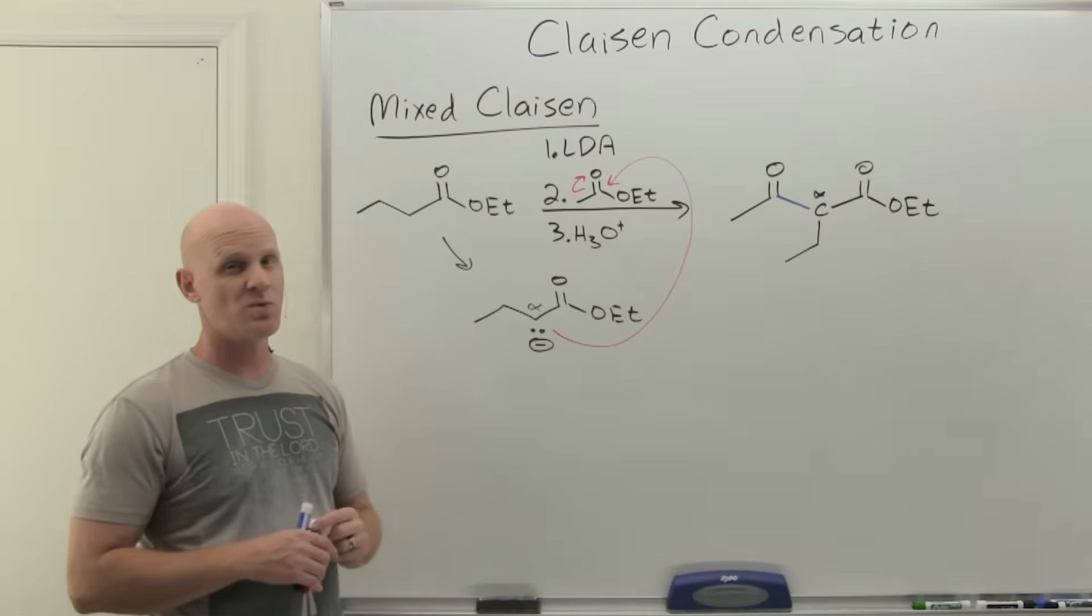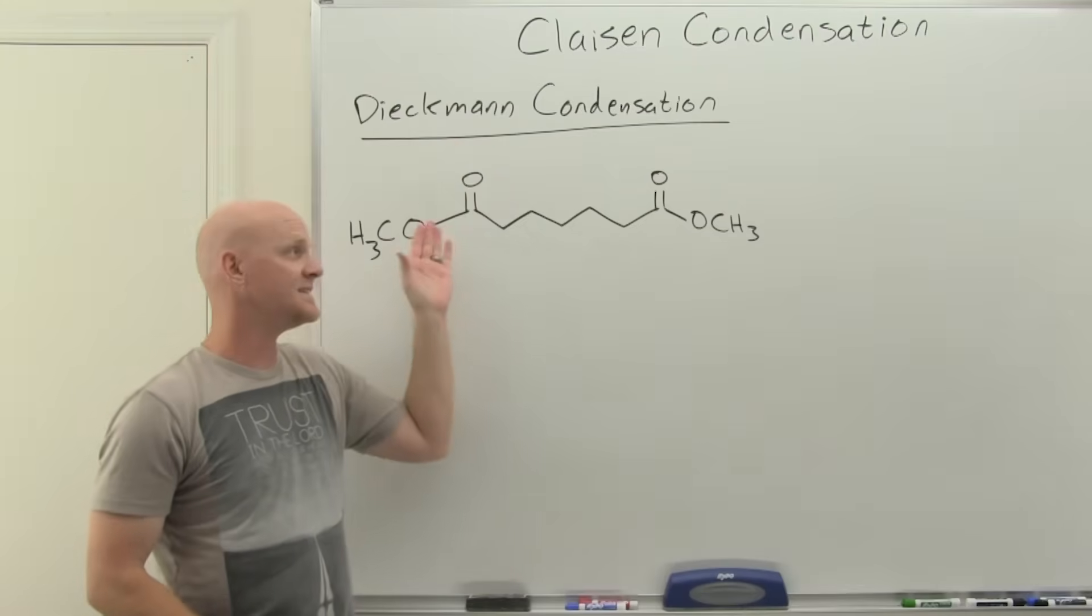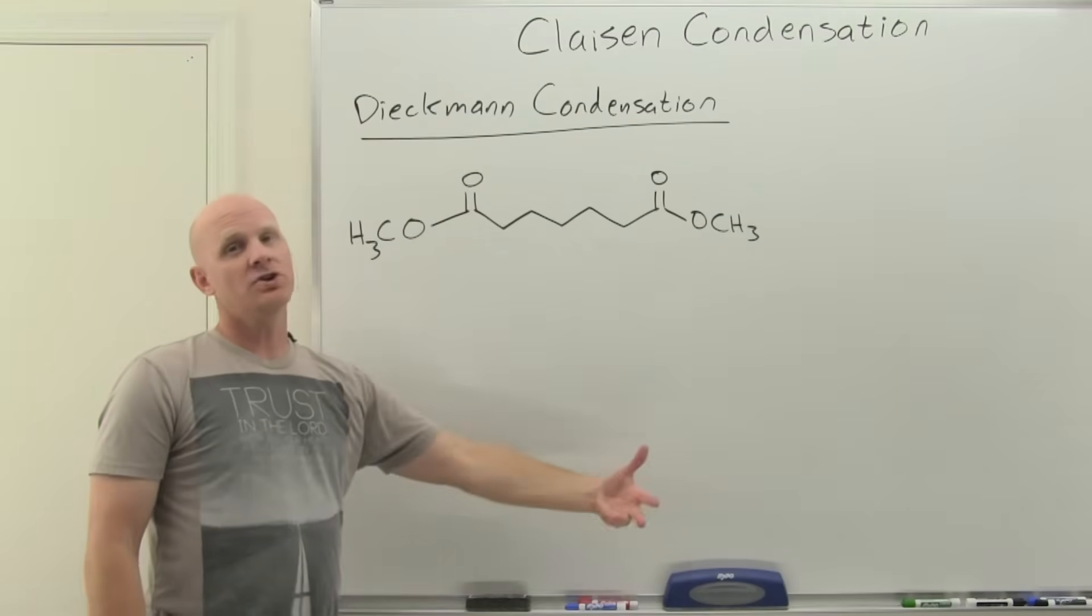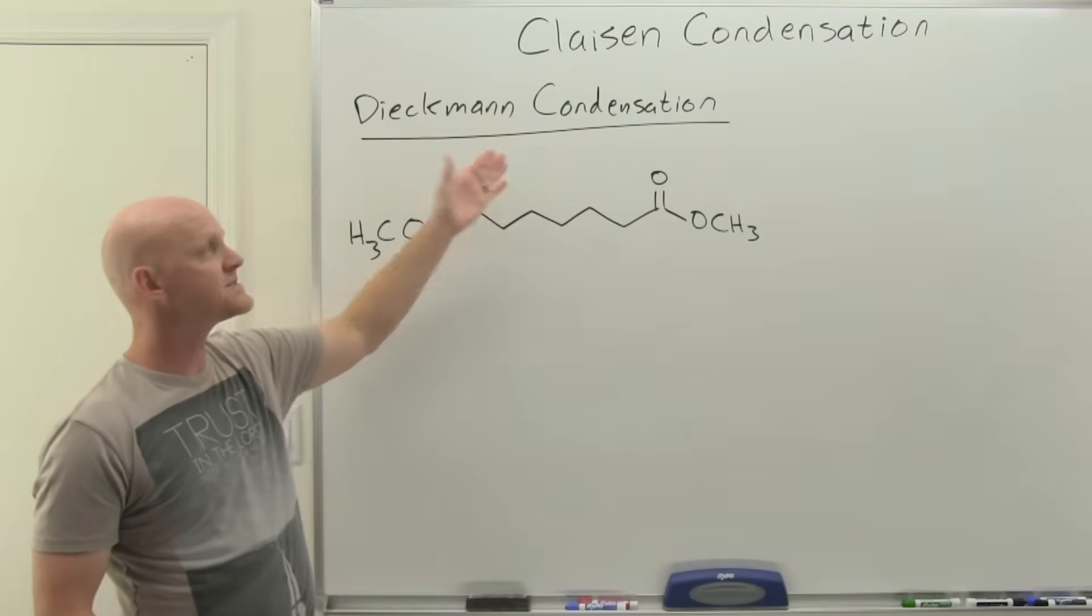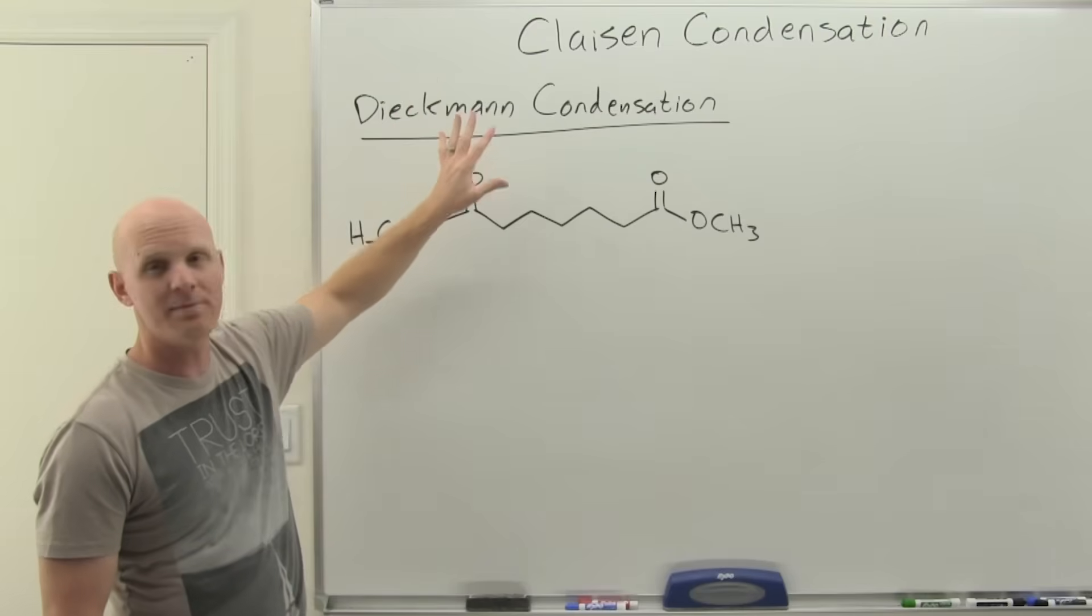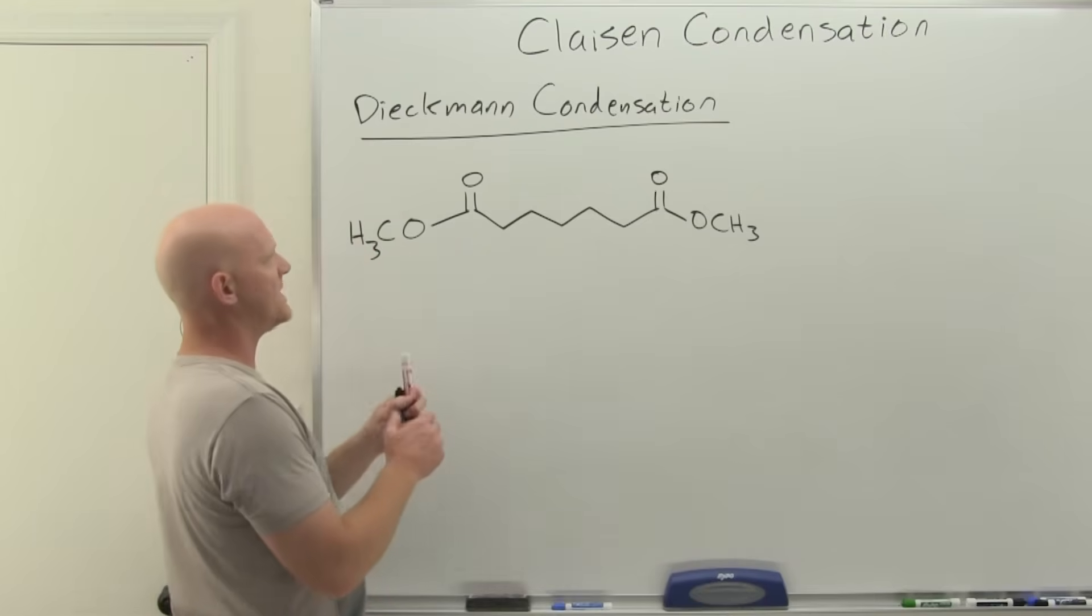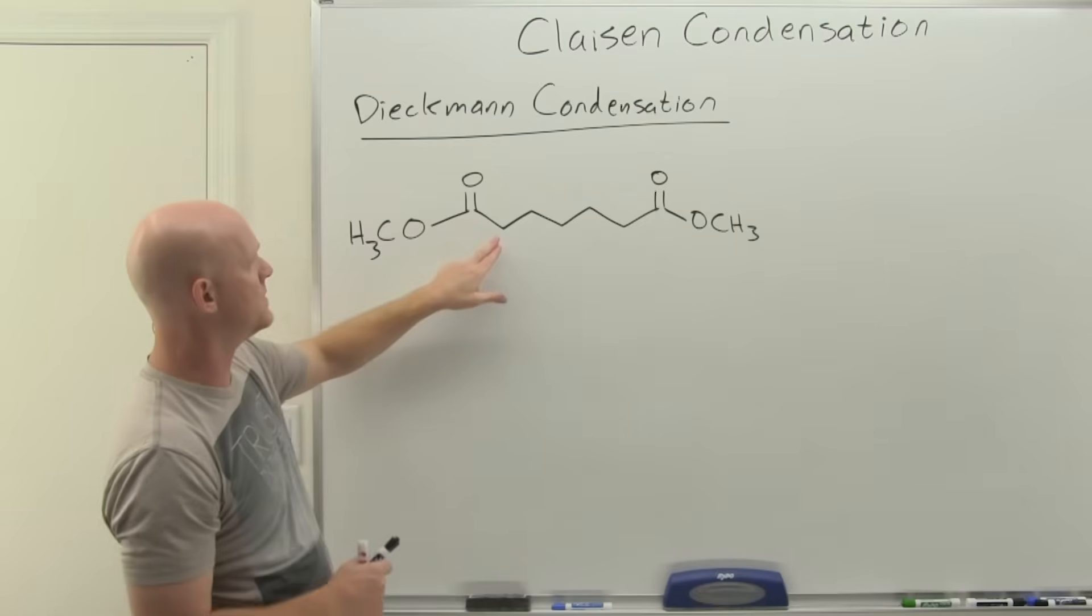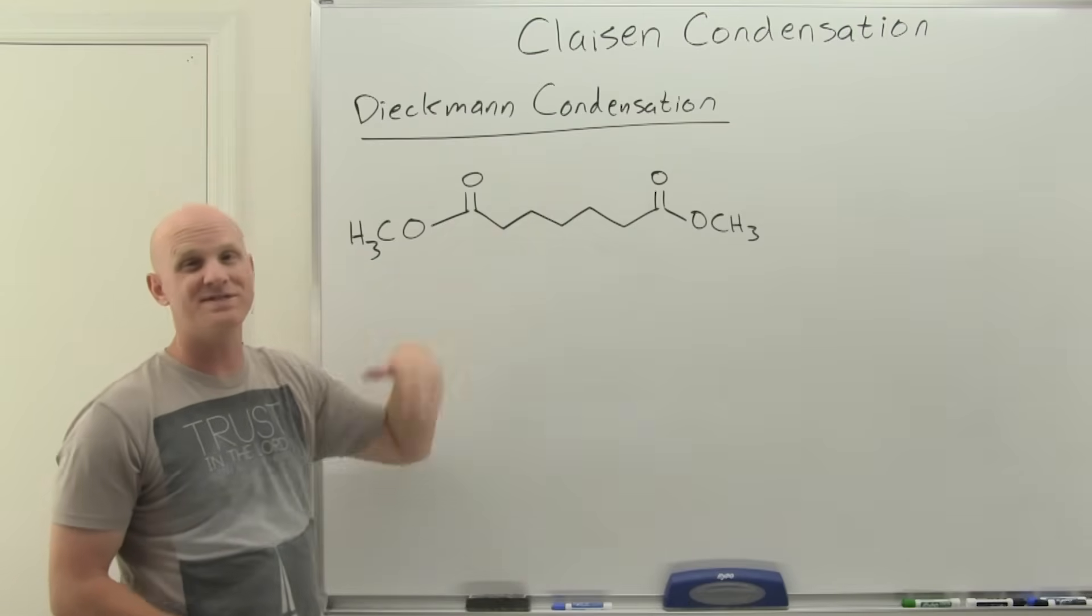This is the Diekmann condensation, we're going to need a diester in this case. This might as well have just been called an intramolecular Claisen condensation. This is nothing more than an intramolecular Claisen condensation. We envision we are going to deprotonate one of these alpha carbons, with this thing being symmetrical it doesn't matter what you choose. If it had not been symmetrical you'd have to consider both versions. Had it not been though you'd consider possibly getting two products. With this being symmetrical it's the same thing either way.